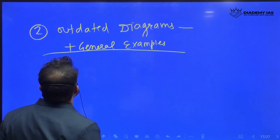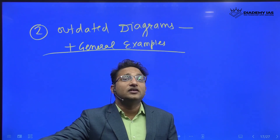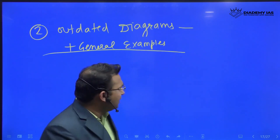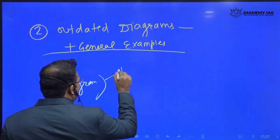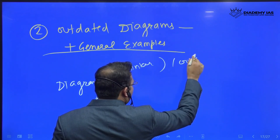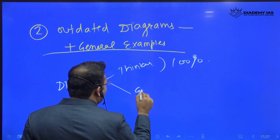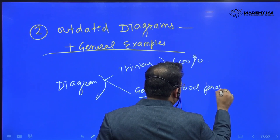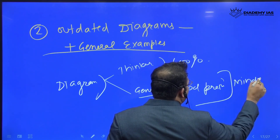The next mistake you are making is using outdated diagrams and general examples. Diagrams have to be new and authentic. There are two kinds of diagrams: those given by the thinker — these are must, 100% diagrams should be used in your answer. Second, diagrams which are general, just for good presentation — you can make these too, but for that you should have the habit of making mind maps.